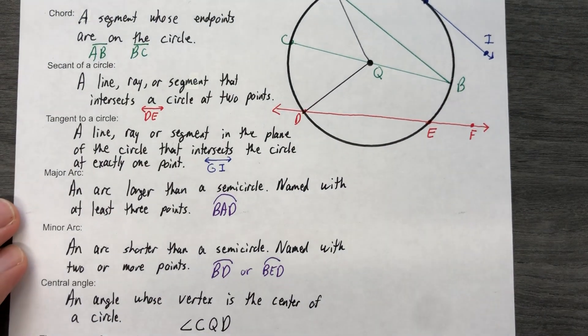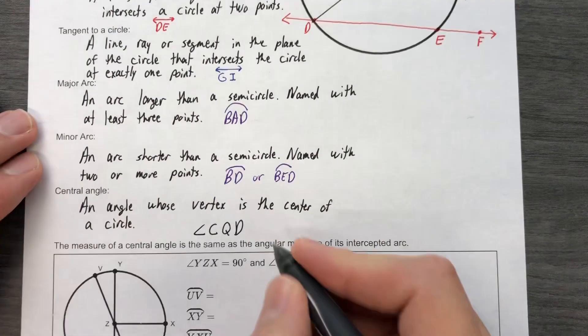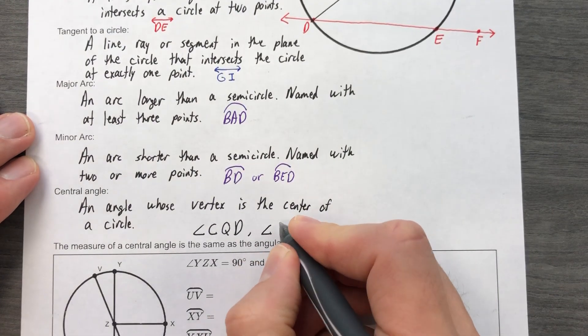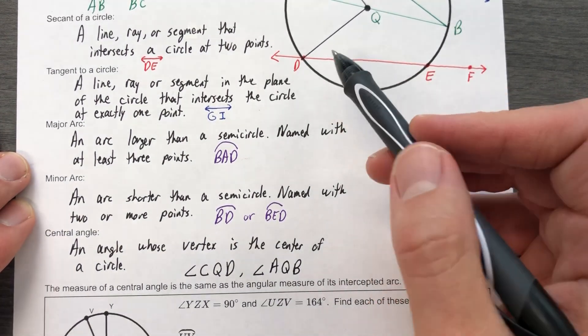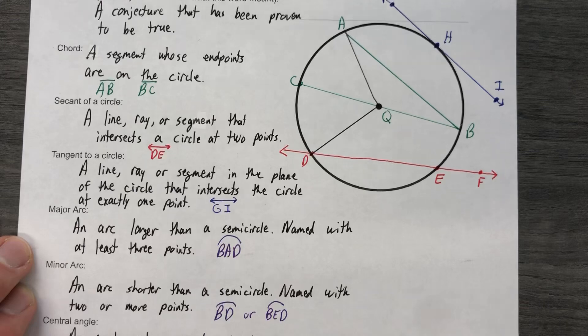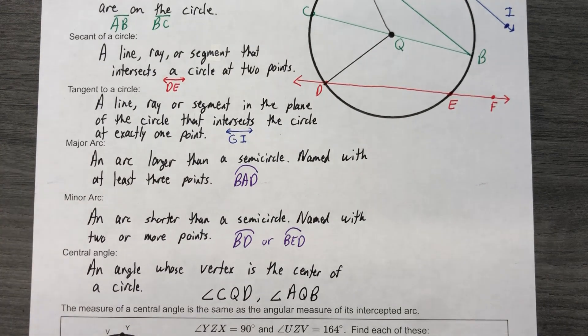But notice the middle letter, the central letter in this, is always going to be the center of the circle. Angle AQB. Now clearly there are several others I could do—BQD, which is the same as DQB. There's lots of other different ones I could do. We have a little bit of vocabulary out of the way, now we're going to jump into the theorems.